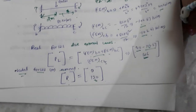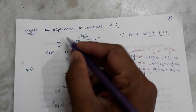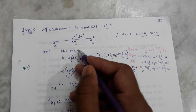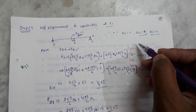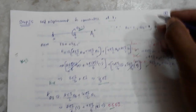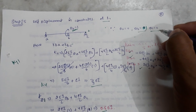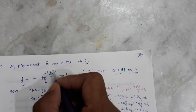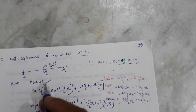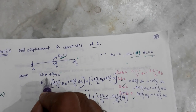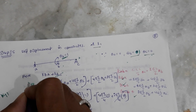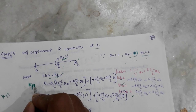Step five is the unit displacement method. For coordinate one, we apply a unit rotation: theta-b equals one, while theta-a equals zero and theta-c equals zero. We then determine the stiffness terms. K11 is obtained from k-B-to-A plus k-B-to-C, representing the force at position one due to unit displacement at position one.